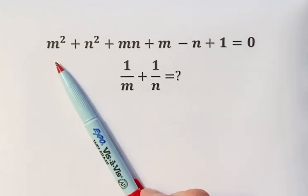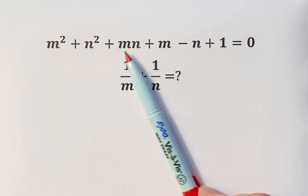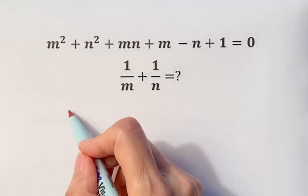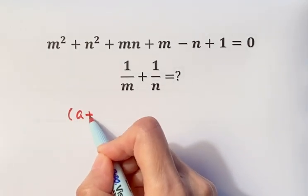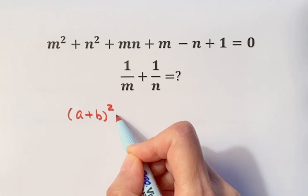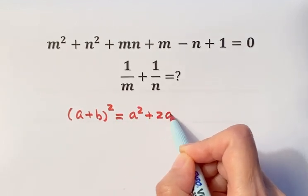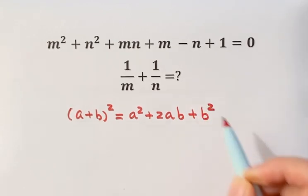First, from m squared plus n squared plus crossing term mn, we think about this formula. Just a plus b squared equals a squared plus 2ab plus b squared.